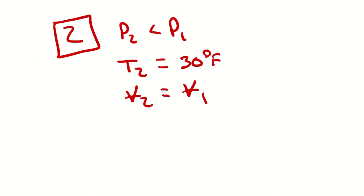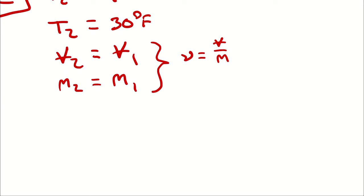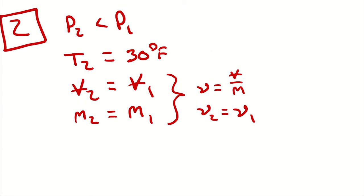However, I know that the volume doesn't change and I know that the mass doesn't change. The fact that the volume doesn't change and the mass doesn't change means that our specific volume — defined as volume over mass — is a specific property and therefore intensive. Because the volume doesn't change and the mass doesn't change, the specific volume will also not change. So the two independent intensive properties I know for state two are temperature and specific volume.